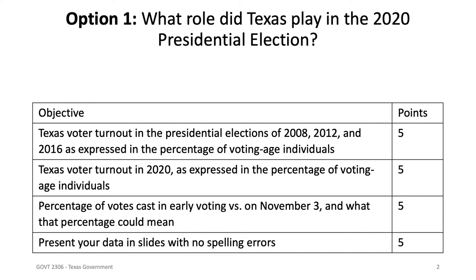Option one: what role did Texas play in the 2020 presidential election? This is a broad topic and you can go with it wherever you want. Did we vote Republican, did we vote Democrat, did we put anybody over the top on electoral college votes? You can talk about voter turnout — and that's the first thing you need to address: talk about what the voter turnout was in 2008, 2012, and 2016, and then talk about voter turnout in 2020. You express this as a percentage of voting age individuals.